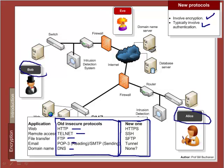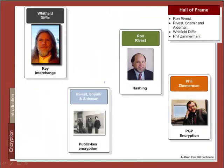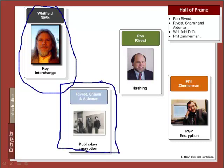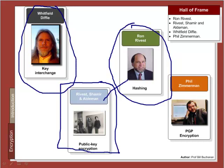Authentication is just as important as security. The main people we will come across include Whitfield Diffie, who came up with key interchange and envisioned public key encryption. We will look at Rivest, Shamir, and Adleman, who came up with the public key encryption method called RSA, named after themselves. We will also see Ron Rivest, who advanced work on encryption and hashing, and Phil Zimmermann, who created the PGP encryption method.